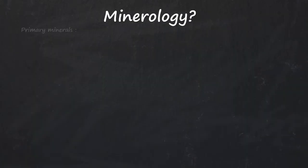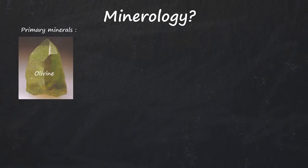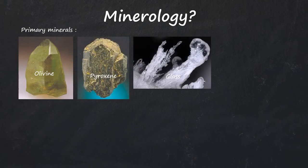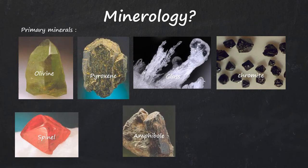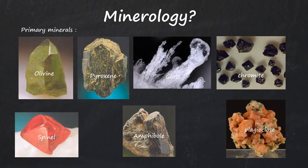Mineralogy. Komatiite contains olivine, pyroxene, glass, chromite or spinel, and occasionally amphibole and plagioclase. These rocks undergo metamorphism, hydrothermal and seafloor alteration and deformation which alters their primary mineralogy.